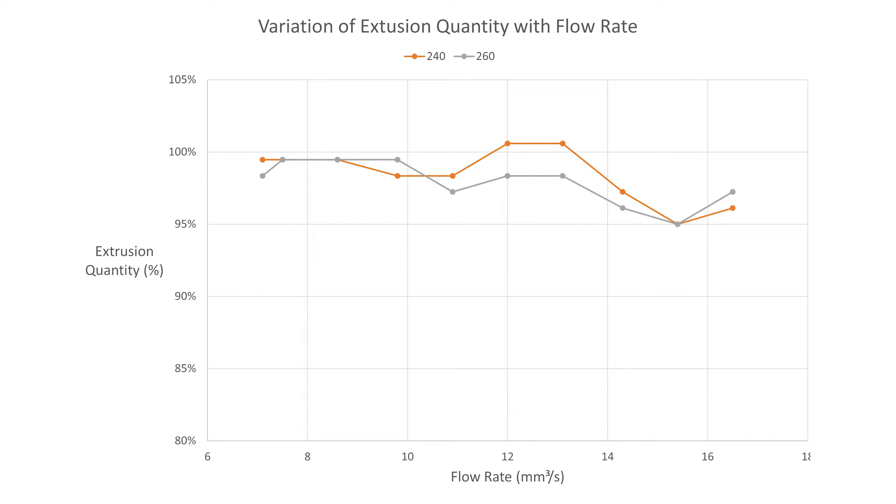Interestingly, 260 degrees Celsius almost always performs worse than 240 degrees Celsius when it comes to extrusion quantity at any flow rate.